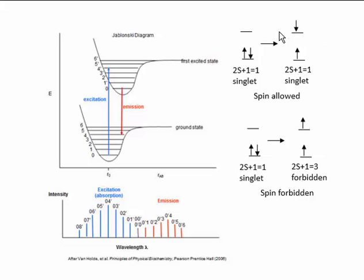Let's look at the electron that's promoted. If we have a molecular orbital with two electrons and a photon is absorbed, one electron will go to a higher energy level. Notice that the spin stays the same, so there are no unpaired electrons. The total spin S is plus one-half minus one-half, which is zero — this is a singlet state. When it's excited, it also remains in a singlet state, and this is a spin-allowed transition.